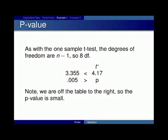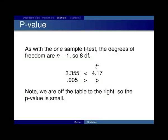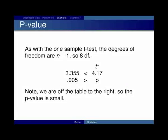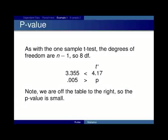As with the one-sample t-test, the degrees of freedom are n minus 1. So, in this case, 8 degrees of freedom. So, you go to the 8 degrees of freedom table, and you notice that you're off the table to the right. The test statistic is 4.17, which is greater than the biggest value on the table, which is 3.355. Therefore, your p-value is less than 0.005.